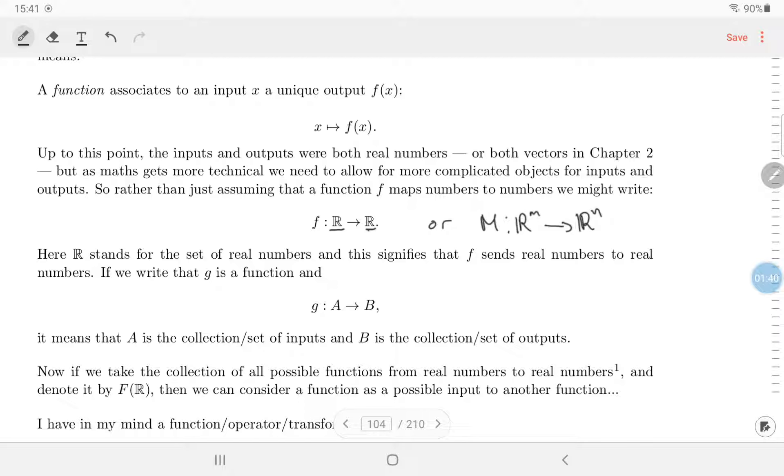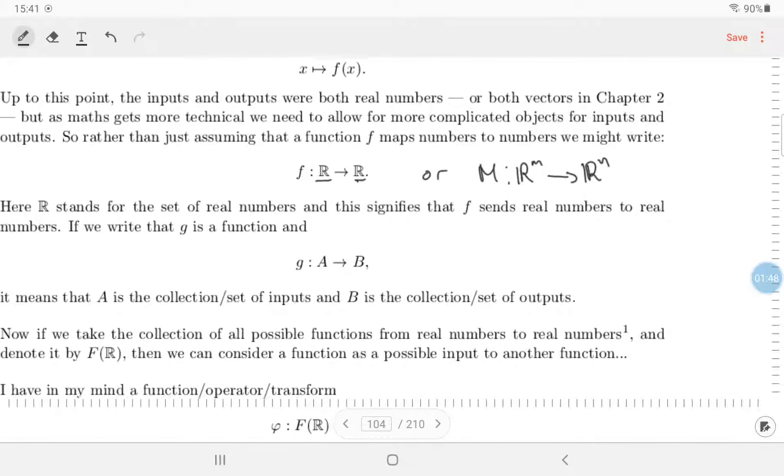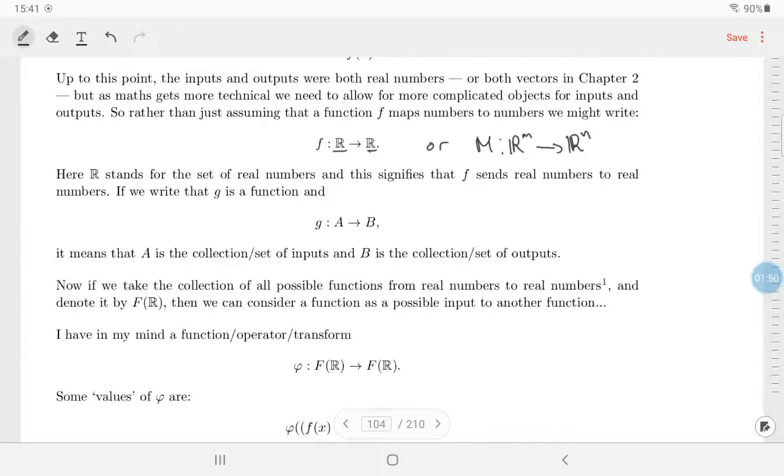You want to be more careful about specifying what are the inputs, what are the outputs. In general, if you want to write that g is a function and it sends A to B, this is how you write: all the inputs are A and the outputs are B.